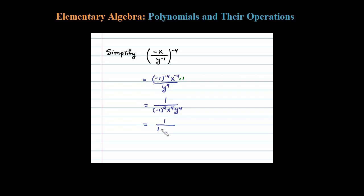x to the fourth, y to the fourth. And so in the back of the book, you're just going to see 1 over x to the fourth times y to the fourth.